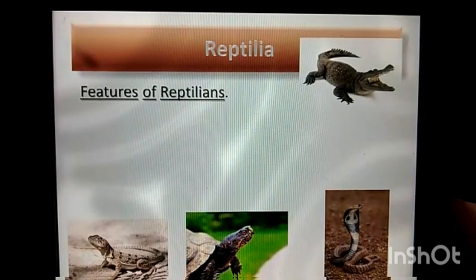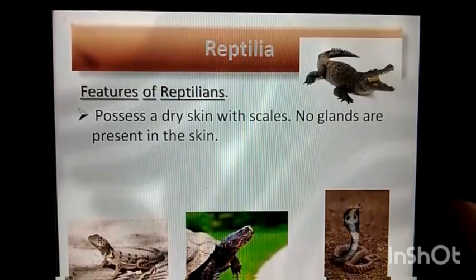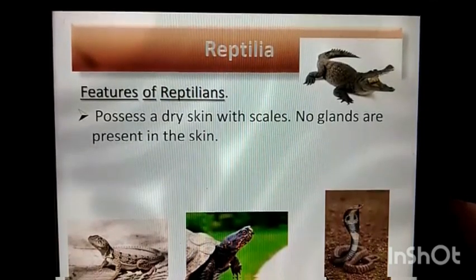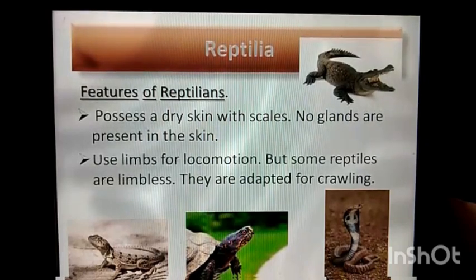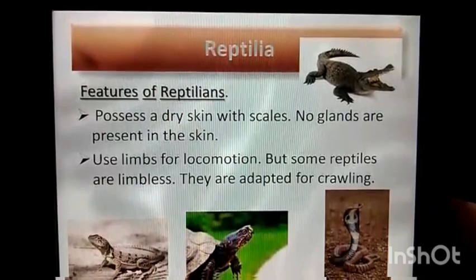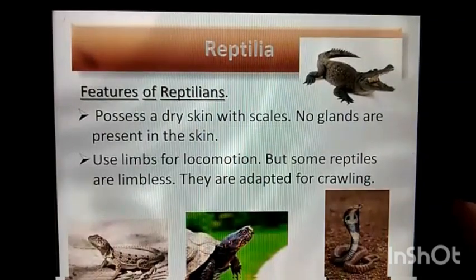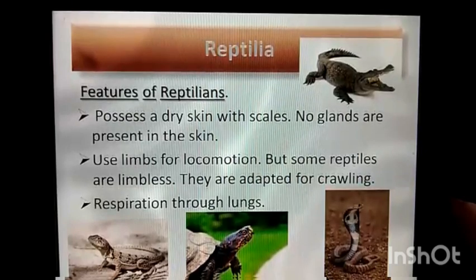Features of Reptilia: they possess a dry skin with scales. No glands are present in skin. They use limbs for locomotion, but some reptiles are limbless — they are adapted for crawling. Respiration through lungs.